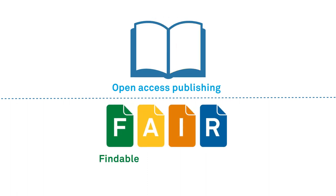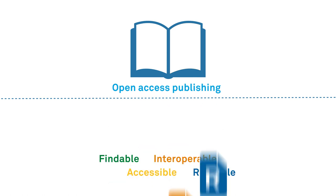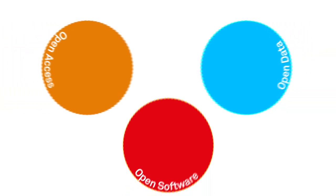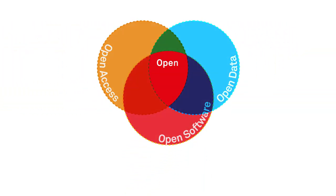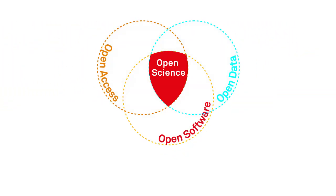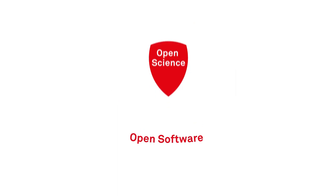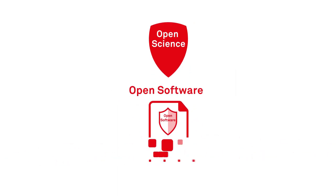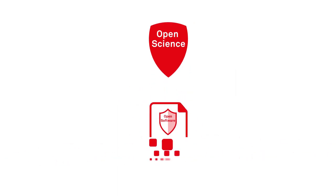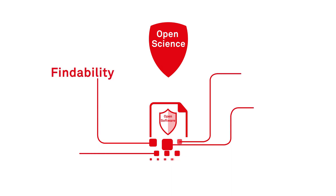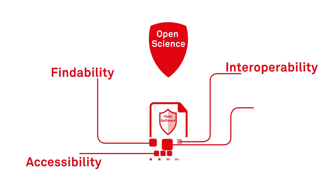Data that is findable, accessible, interoperable and reusable. But these two principles together do not constitute open science. True open science also depends on fair software which, like data, meets the accepted standards of findability, accessibility, interoperability and reusability.